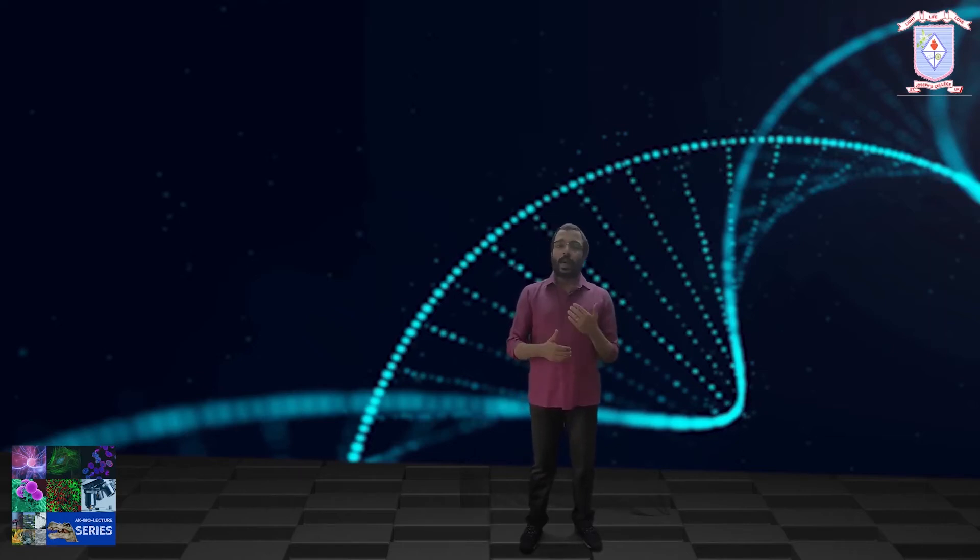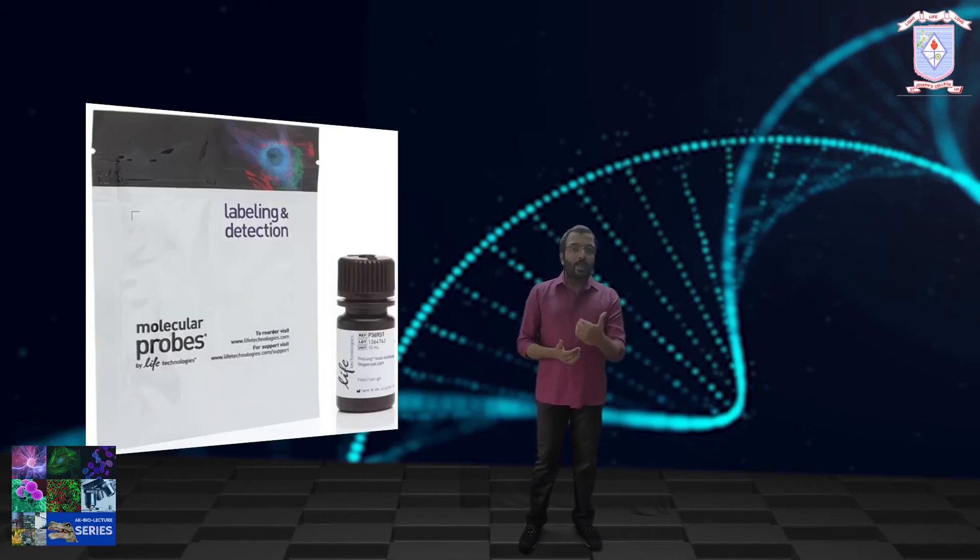Although it was unsuccessful as a drug for trypanosomiasis, further investigations indicated it bound strongly to DNA and became more fluorescent when bound. As DAPI can pass through an intact cell membrane, it can be used to stain both live and fixed cells.